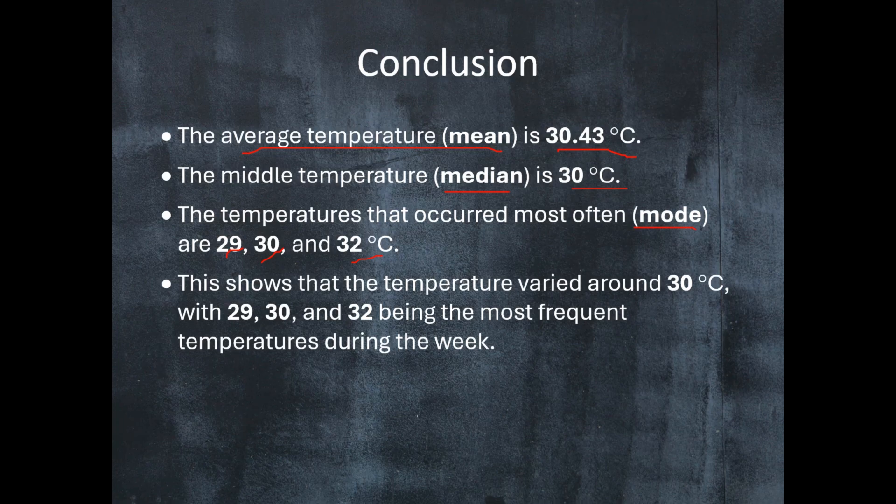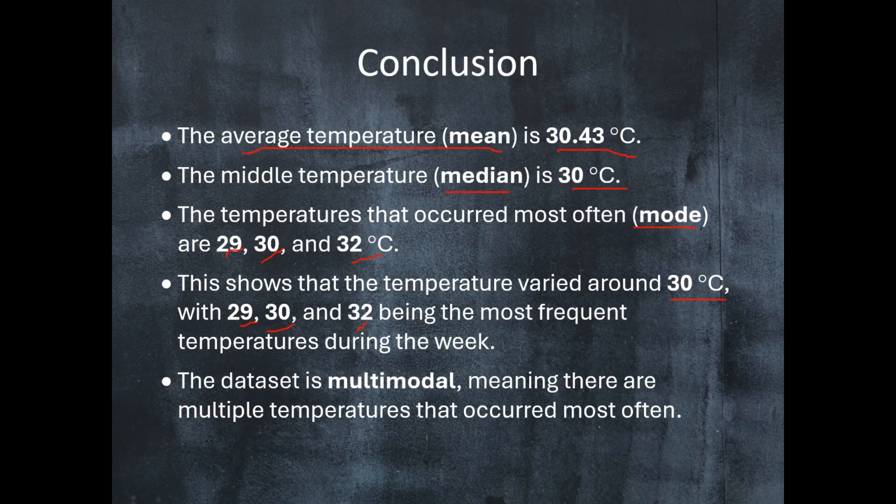This shows that the temperature varied around 30 degrees Celsius, with 29, 30, and 32 degrees Celsius being the most frequent temperatures during the week. We can also say that the data set is multimodal, meaning there are multiple temperatures that occurred most often.